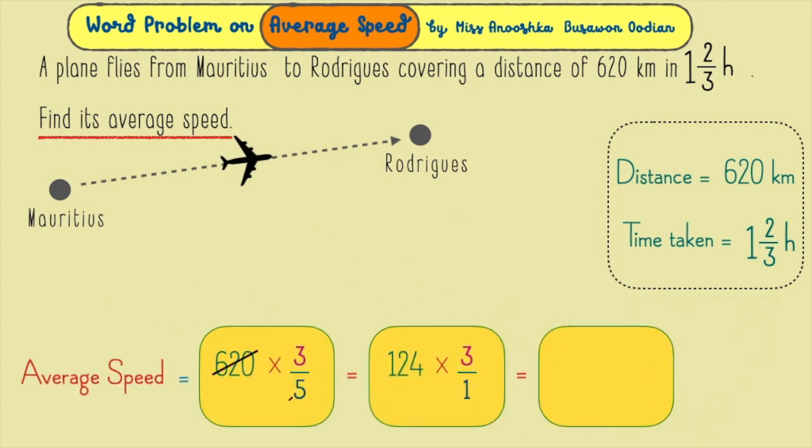Finally, you divide 620 kilometers by the denominator 5, and then multiply the result by the numerator 3 to get the average speed, which is 372 kilometers per hour.